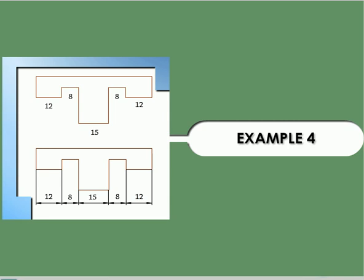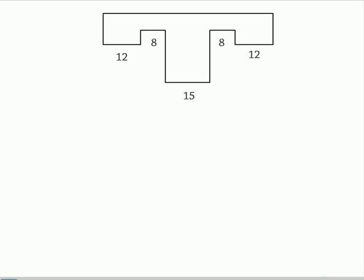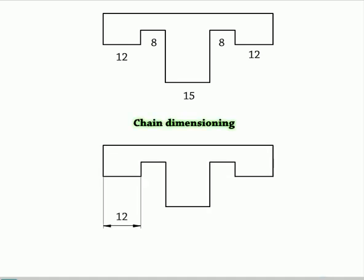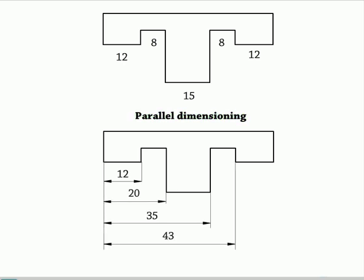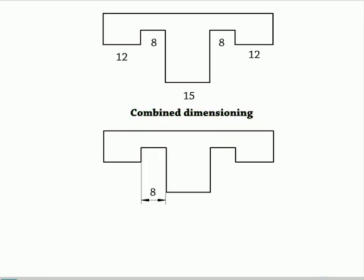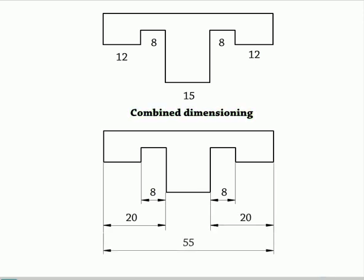Dimensioning practice on chain, parallel, and combined dimensioning. A view with wrongly represented dimensions is available. The task is to show the same view with proper dimensioning based on chain, parallel, and combined dimensioning methods. In chain dimensioning, all the dimensions are shown continuously one after the other. In parallel dimensioning, the dimensions are shown with a common origin. In combined dimensioning, both methods are used to show the dimensions conveniently.